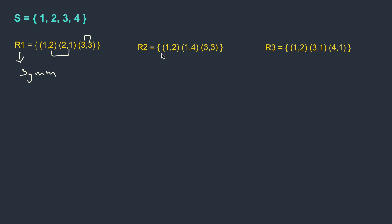Now consider a relation with (1,2), (1,4), and (3,3). For (1,2), there should be (2,1) — not there. For (1,4), there should be (4,1) — not there either. But (3,3) can map to itself. So this is not symmetric. A relation where for every element there is no reverse element, except when x equals y, is called anti-symmetric.